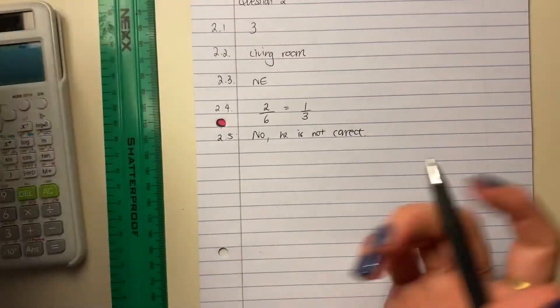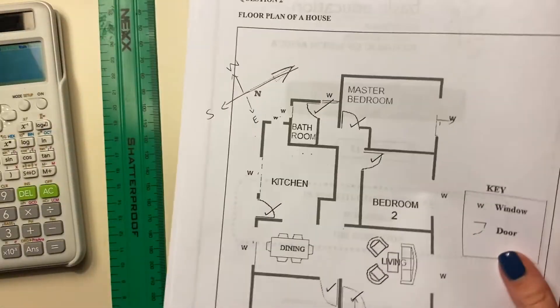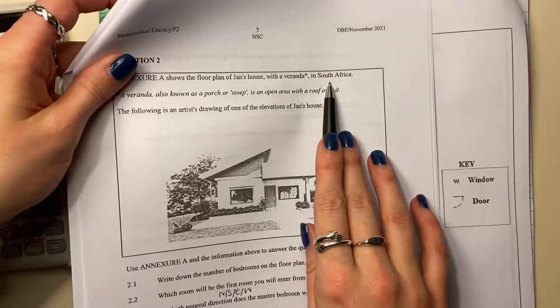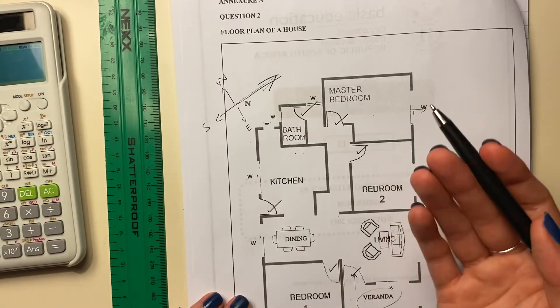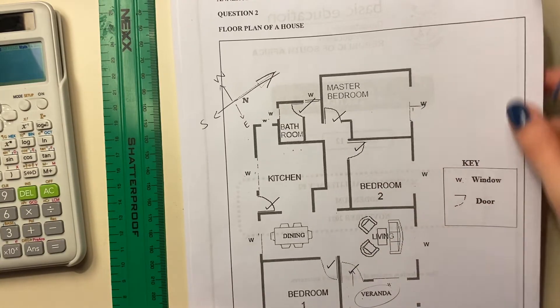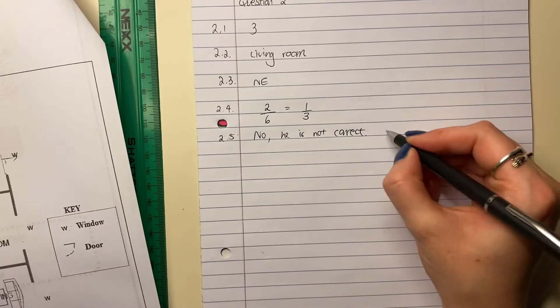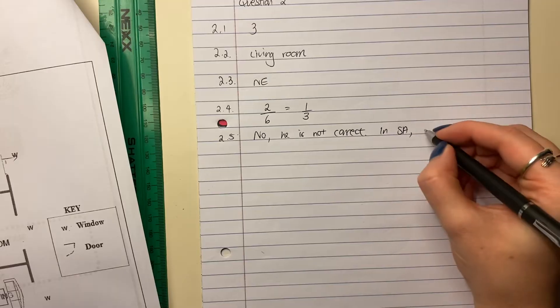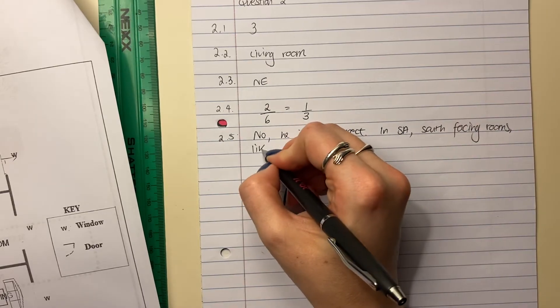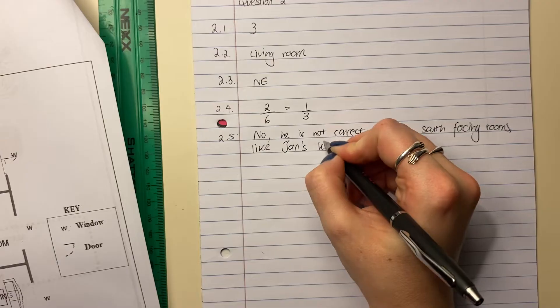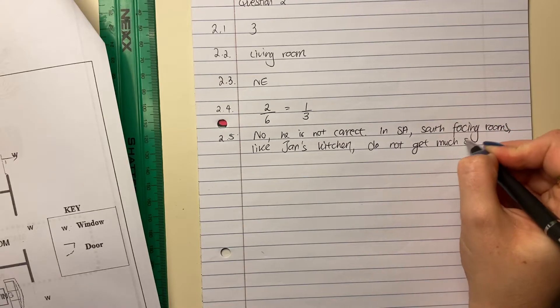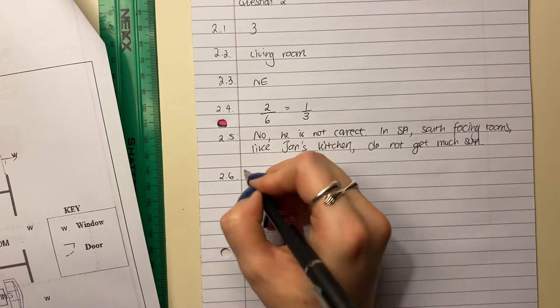So what I'm going to say is, you can say that it is south facing. So basically in South Africa, Anna told us that this was in South Africa. In South Africa, if a room is south facing, it doesn't get a lot of sun. A north facing room gets a lot of sun. So that's quite important. So let's say here, no, he is not correct. So you say in SA, south facing rooms, like the kitchen, like Jan's kitchen, do not get much sun. And we have just got ourselves three marks. Good job, guys.